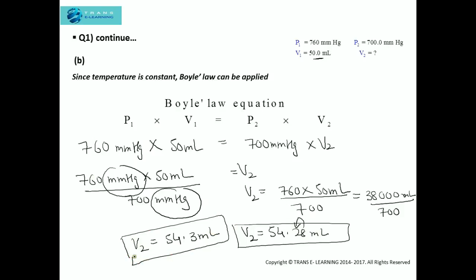That's the final volume. Now if you can see here, when the pressure was more the volume was less. When the pressure got decreased the volume increased. So the pressure is inversely proportional to volume, which is Boyle's Law.